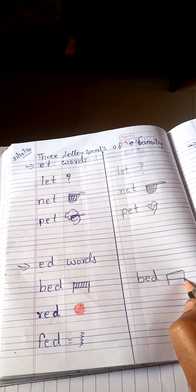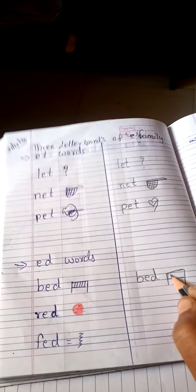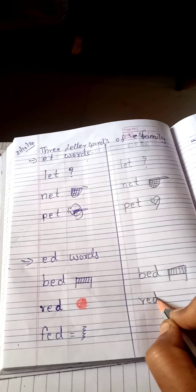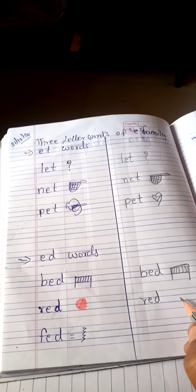Now next, R-E-D, red. Okay, you are going to color in this circle. Red color.